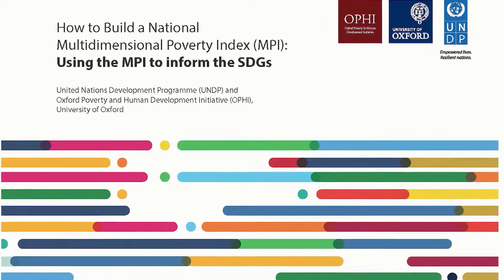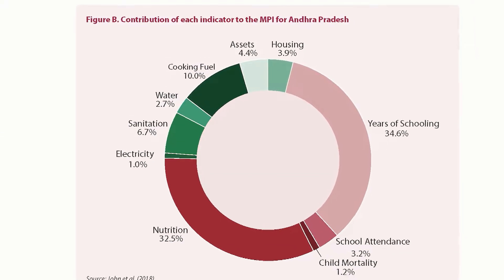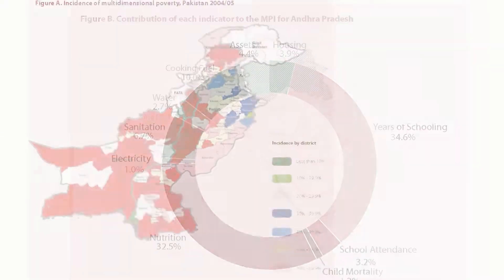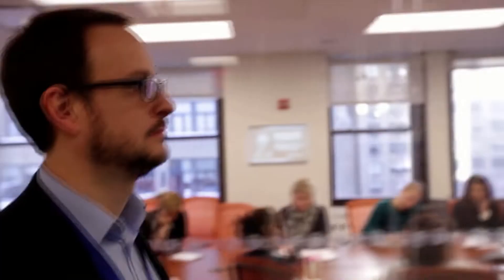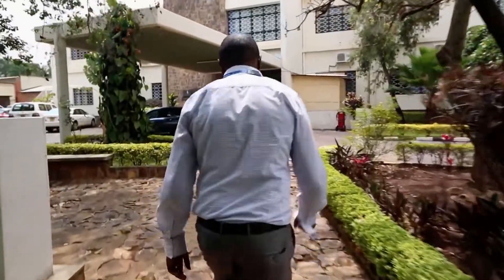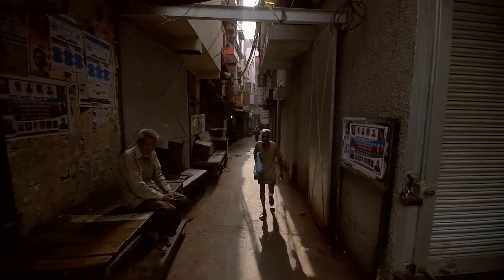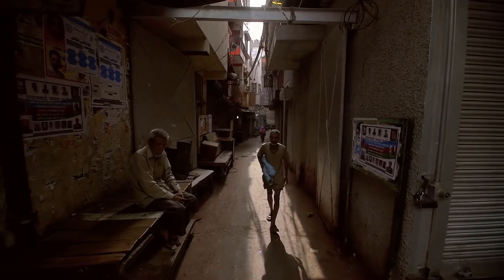UNDP and the Oxford Poverty and Human Development Initiative are offering a multidimensional approach to measure poverty. The six-week course, Designing a Multidimensional Poverty Index, will help you to develop an index to be applied at national and subnational levels. The course will be offered in English, Spanish, and French.